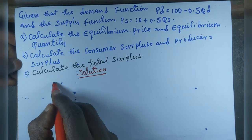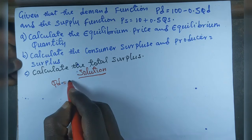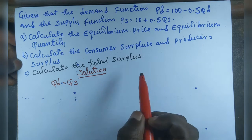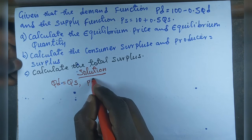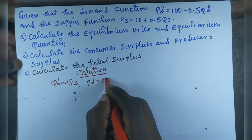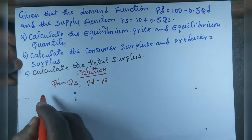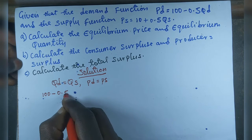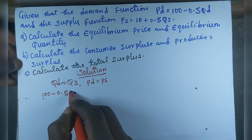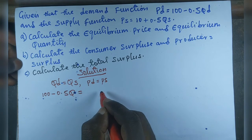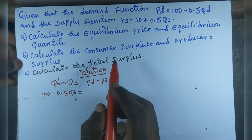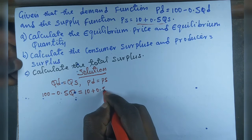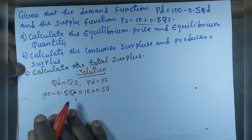We know that at equilibrium, quantity demanded is equal to quantity supplied. So we are going to equate our demand function to the supply function. We set PD equal to PS, so 100 minus 0.5Q equals 10 plus 0.5Q.